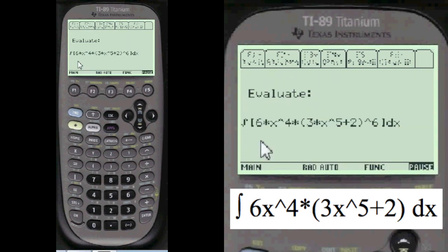I always show you what you've entered. 6x^4 times the quantity 3x^5 plus 2 to the 6th. Looks pretty good to me. I'm going to say it's okay.